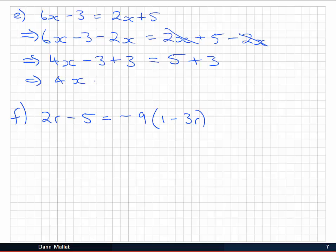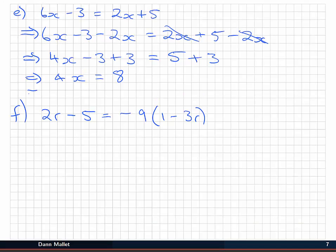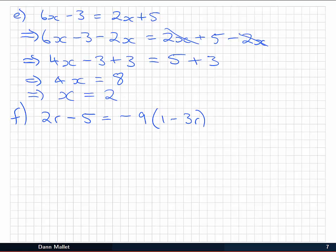If we clean that up, we have 4x equal to 8. And finally we can see that to get x all by itself, I need to divide by 4. I need to divide on both sides. So if I do that, I have 4x divided by 4, giving me x, and that's going to be equal to 8 divided by 4, which is 2. So you can see there was a bit more in that one. Have a go yourself now at part f. It's even a little bit harder again.